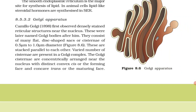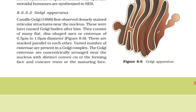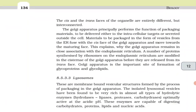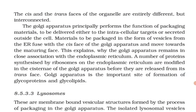Golgi apparatus: Camillo Golgi in 1898 first observed densely stained reticulum structures near the nucleus, later named Golgi bodies after him. They consist of many flat disc-shaped sacs or cisternae of 0.5 to 1 micrometer diameter, stacked parallel to each other. The Golgi cisternae are concentrically arranged near the nucleus with a distinct convex cis or forming phase and concave trans or maturing phase. The cis and trans faces of the organelle are entirely different but interconnected.